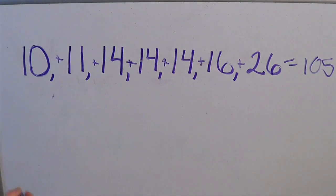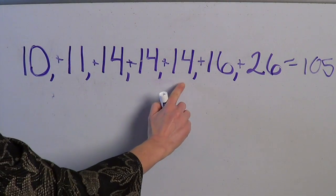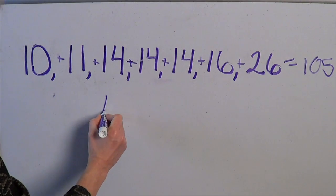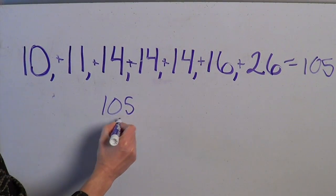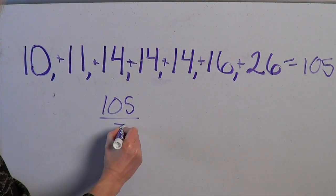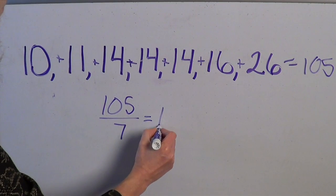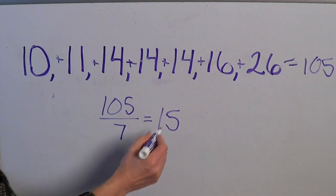Then we divide by the number of numbers. Since there are seven numbers, we divide 105 by 7, which equals 15. Therefore, 15 is the mean in this number group.